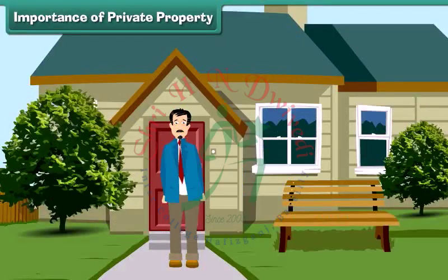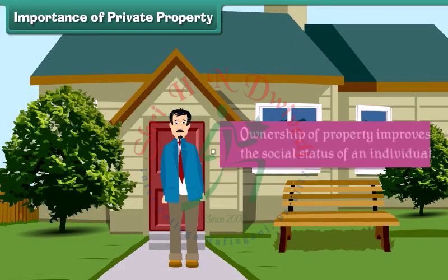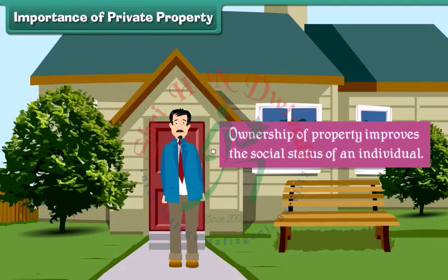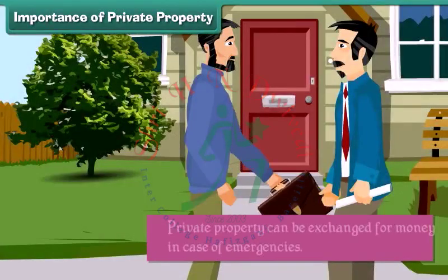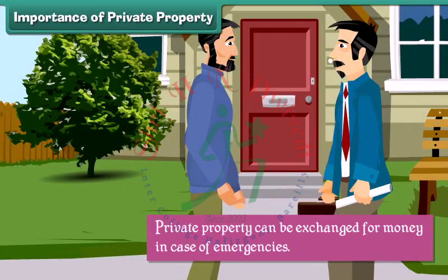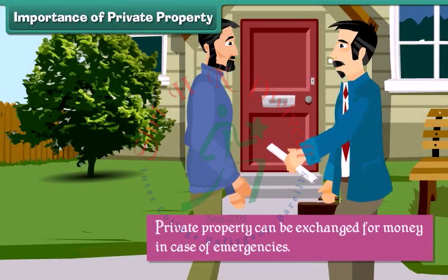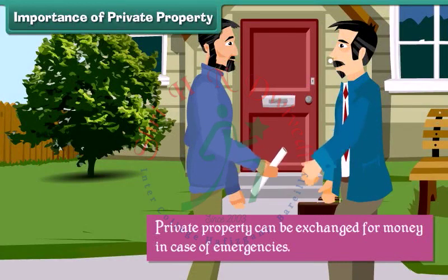Since public property is owned by the government, the government can sell, exchange, or destroy it. Ownership of property improves the social status of an individual. Private property can also be exchanged for money in case of emergencies.